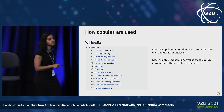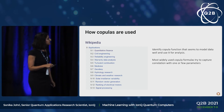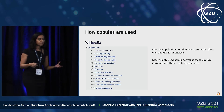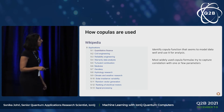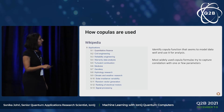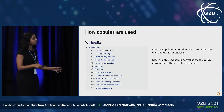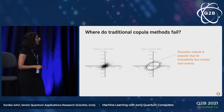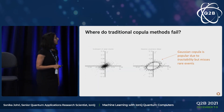The traditional way people use copula functions is to identify some function that seems to fit a dataset well, fit that function to the dataset, and then use it for analysis. Most widely-used copula functions try to capture the correlation structure of the data with one or just a few parameters.